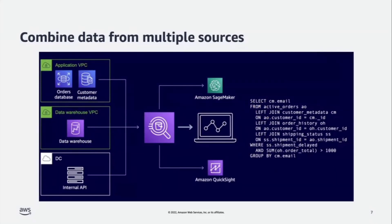Here's a very common use case. You have transactional data sitting in relational databases, analytical data sitting in a data warehouse, and some data in an on-premise data center. The key thing here is time to market. Customers do not need to build an end-to-end ETL pipeline — extracting, transforming, loading data into S3. Having these connectors means you can dynamically pull data from different sources and combine it for downstream processing, such as a machine learning use case or a BI visualization.